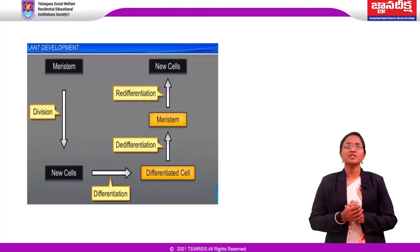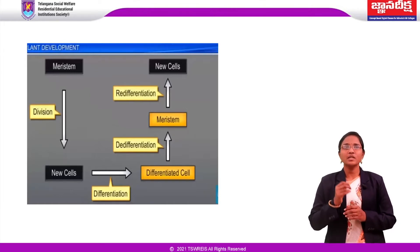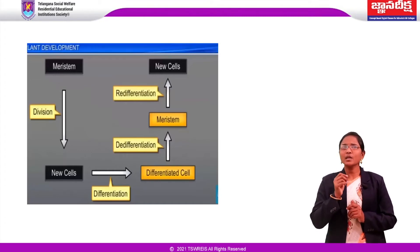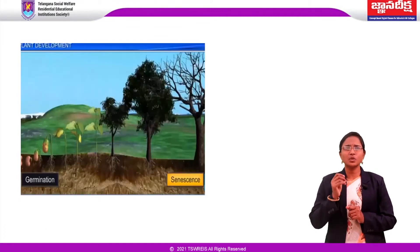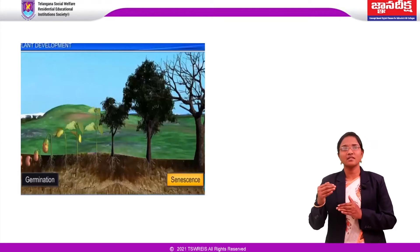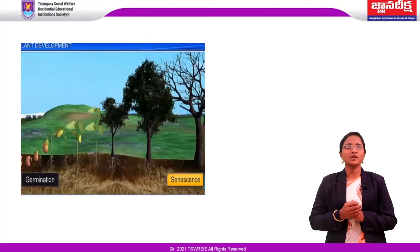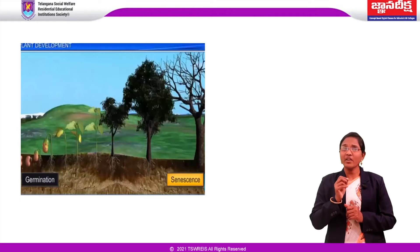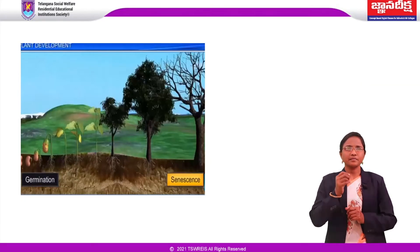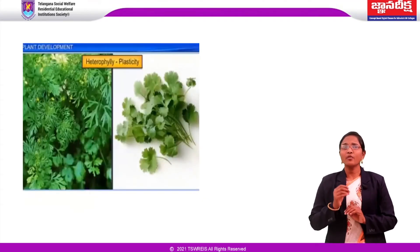In redifferentiation, such meristems or tissues are able to divide and produce cells that once again lose the capacity to divide but mature to perform specific functions. Development is a term that includes all changes an organism goes through during its life cycle — from germination of seed to senescence — including germination, growth, differentiation, and cell death. Plants follow different pathways in response to environment or phases of life to form different kinds of structures; this ability is called plasticity. An example is heterophylly.